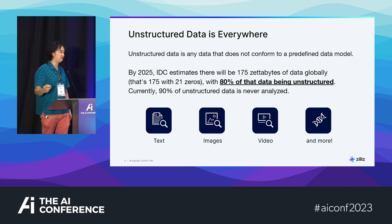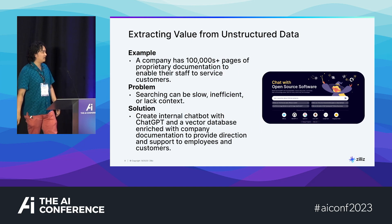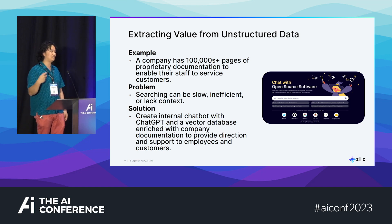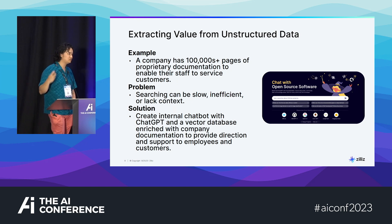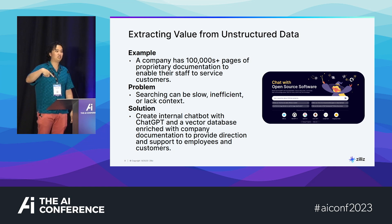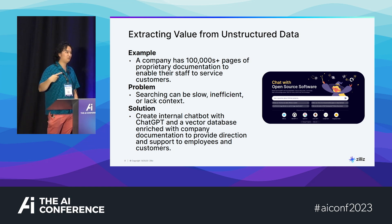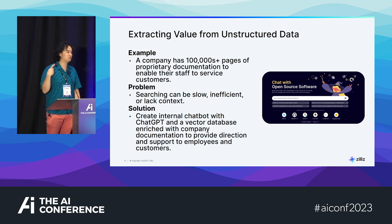Unstructured data is pretty much everywhere. This is going to be the most important type of data to take advantage of in the next 10 to 15 years. An example of how you can take advantage of a vector database and unstructured data: in this case we use markdown documents. We built an open source chatbot that allows you to chat with any open source repo — the link is OSSchat.io. The main value proposition is, let's say you're an enterprise company and you have hundreds of thousands or millions of documents. How do you handle chatting with those documents? That's the main value a vector database provides.